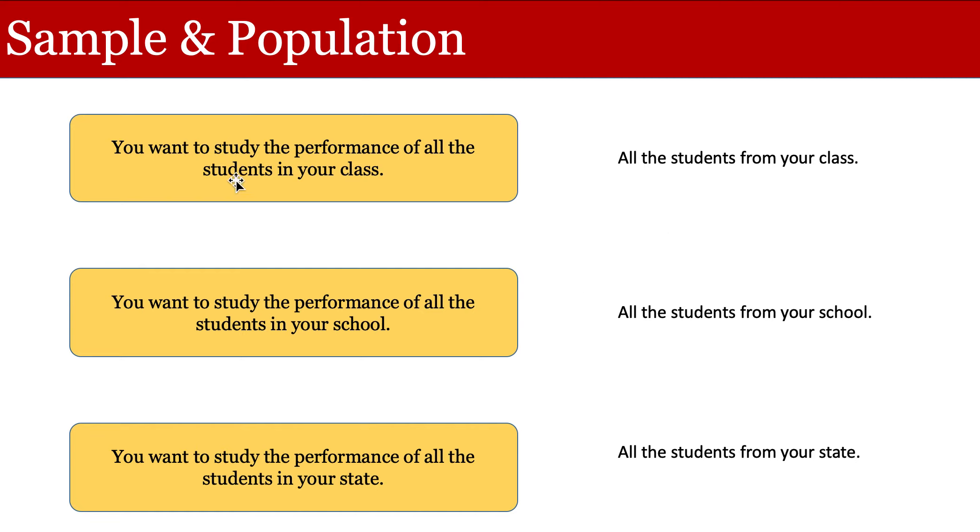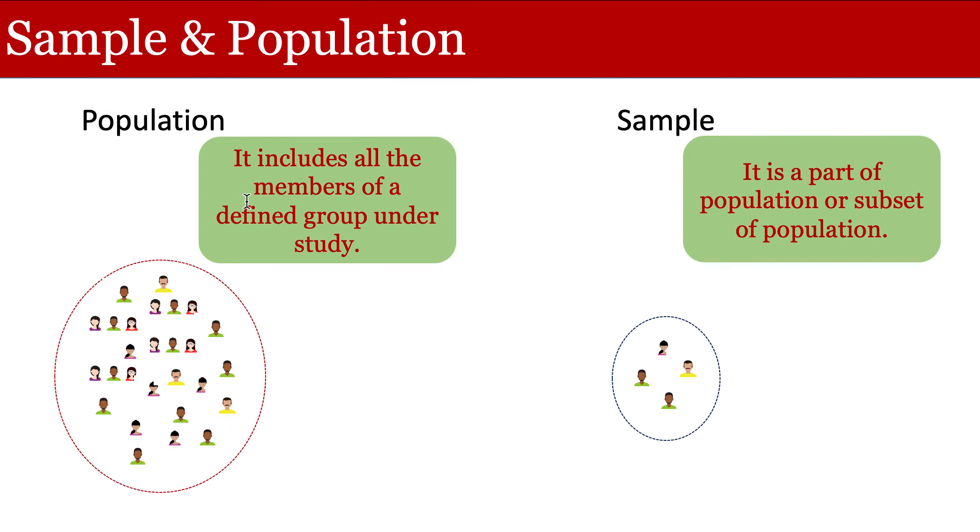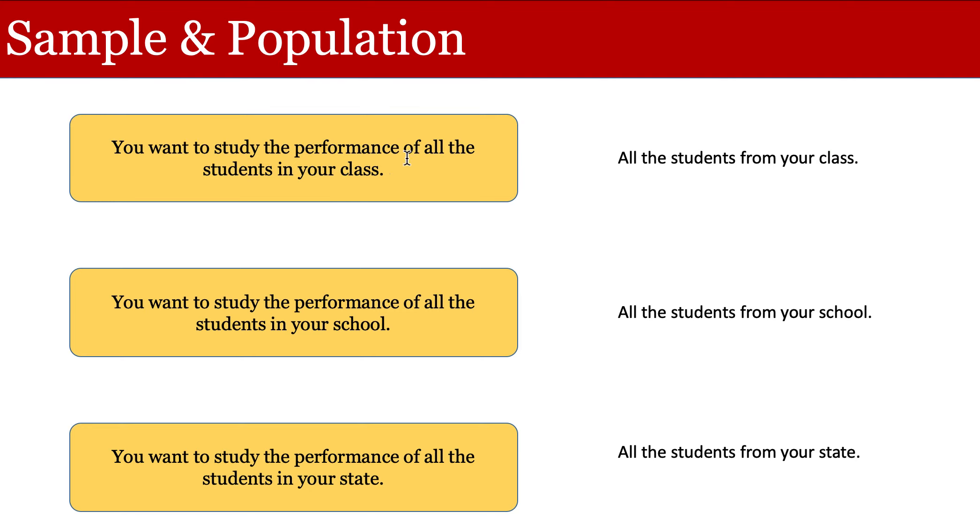So if you can see here, the population depends on the aim of your study. Or if we look at the definition here, population includes all the members of the defined group. So here the defined group is all the students in the class, here all the students in the school, and here all the students in the state. So this group is considered as population.